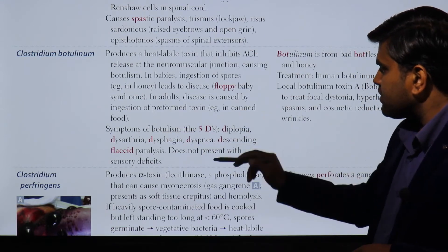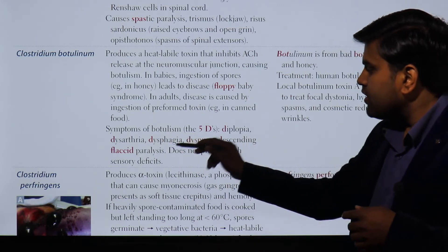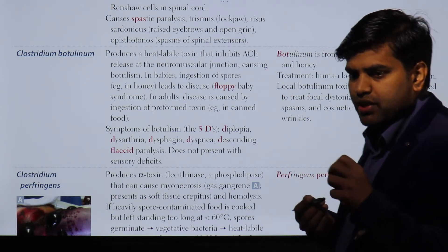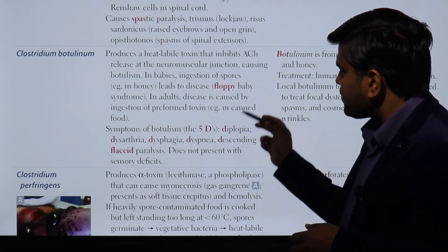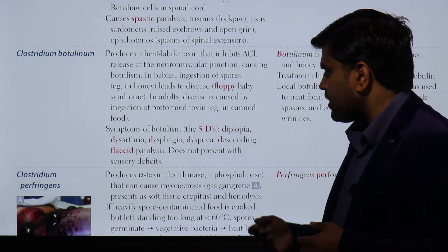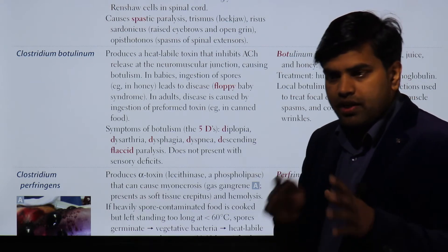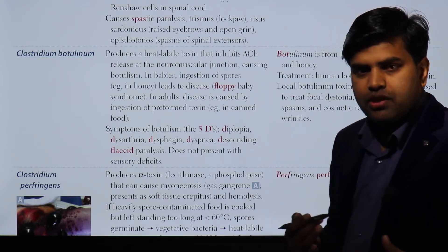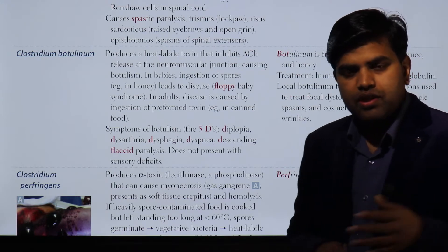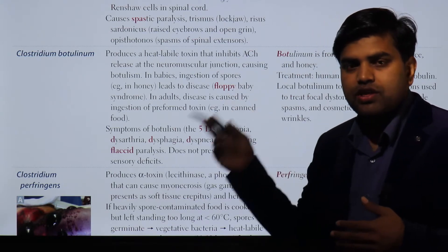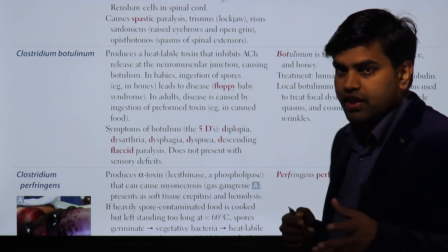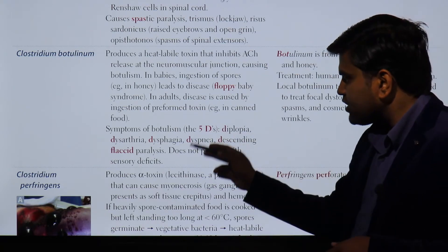The symptoms of botulism can be remembered as the '5 D's': diplopia, dysarthria, dysphagia, dyspnea, and descending flaccid paralysis. Importantly, botulism does not present with sensory deficit. The patient develops flaccid paralysis, but sensation — pain, touch, temperature — is completely intact. Muscle power is lost because acetylcholine is absent, but the sensory system remains intact.